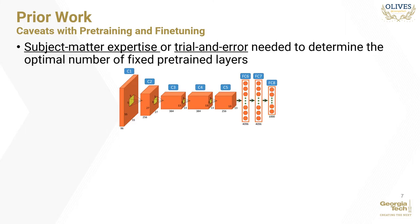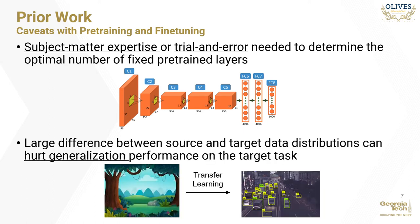There are a couple of caveats to keep in mind while using this strategy to transfer inductive bias into the target task from the related source task. Firstly, the matter of how many layers should be kept fixed, how many epochs to pre-train for, the pre-training and fine-tuning learning rates, and whether more layers should be appended before fine-tuning, is highly subjective and domain dependent. It may require either many trial and errors or subject matter expertise to determine the optimal number of fixed pre-trained layers. Secondly, how well we generalize on the target task is highly dependent on how related the two datasets are. In case the two are very different, transferring inductive bias from the source to the target may actually worsen the generalization performance on the latter.